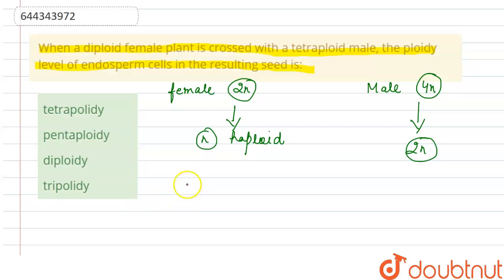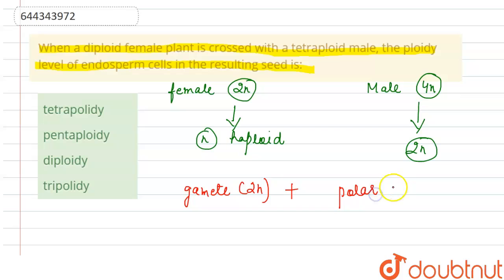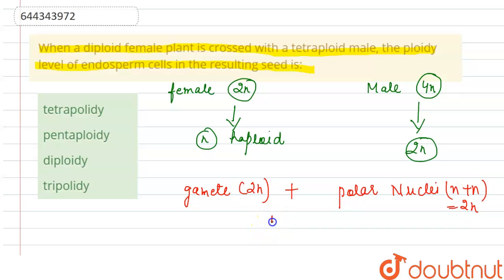Endosperm formation happens when there is a fusion between the male gamete — which is 2N — and the polar nuclei. In the polar nuclei, we have two nuclei, so it becomes N plus N, giving us 2N. The fusion between 2N and 2N leads to the formation of a 4N situation.